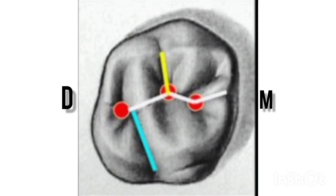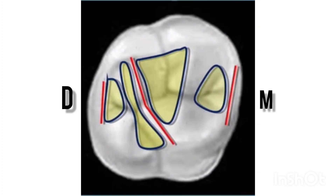The red dot indicates the distal, central and mesial pits. The yellow line indicates the buccal groove and the blue line indicates the palatal groove. From the right side, the red line indicates the mesial ridge, triangular fossa and the oblique ridge, triangular fossa and the distal ridge.